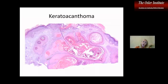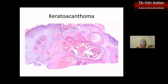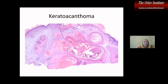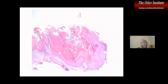Here's an example of keratoacanthoma. Remember, this is a subtype of squamous cell carcinoma that from a clinical standpoint arises quickly and then tends to involute on its own. What you see under the microscope is a crateriform type of lesion where you have crateriform architecture diving down into the dermis with lots of keratin. Here is a very early forming keratoacanthoma, where you can see a buttress coming up and then diving down into the dermis in a crateriform pattern.